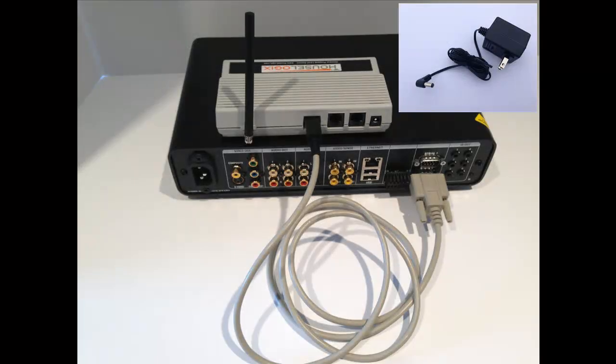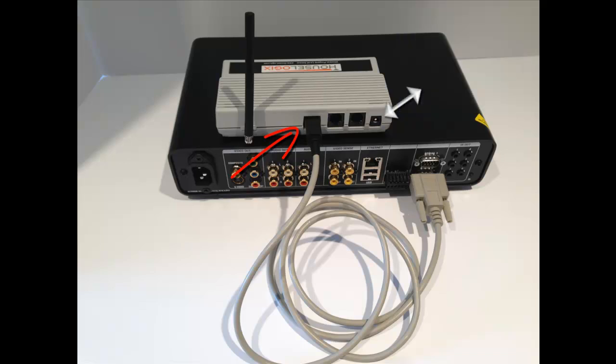Plug in the provided mini-DIN to serial cable to the mini-DIN connector on the receiver. Plug in the provided power supply to the receiver.